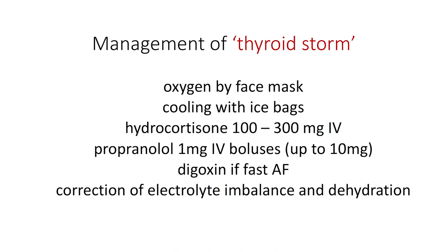What would you do if a patient develops thyroid storm? The first step is to give oxygen through face mask and then cool the patient with ice bags. You need to give hydrocortisone 100 to 300 milligrams intravenously. You will also need to give propranolol 1 milligram IV boluses, up to 10 milligrams. Digoxin can be used if there is fast AF, and any electrolyte imbalance and dehydration will need to be corrected.